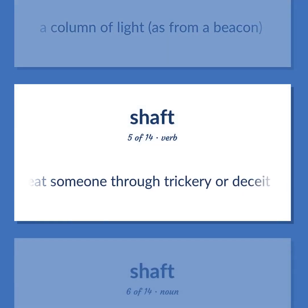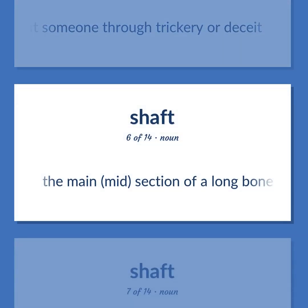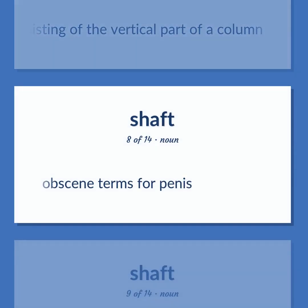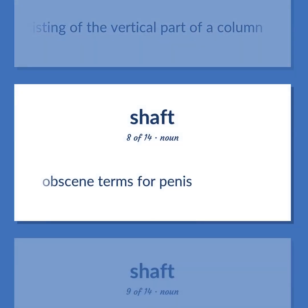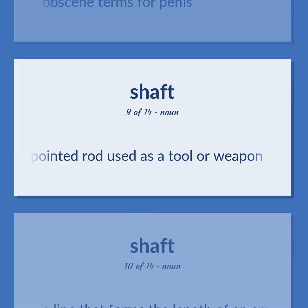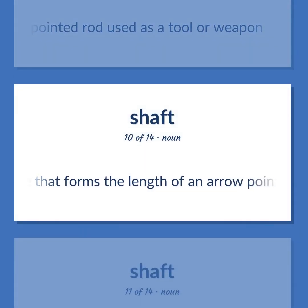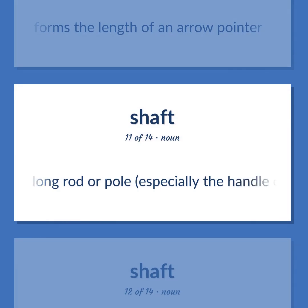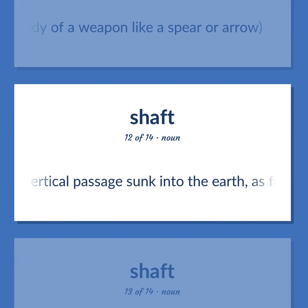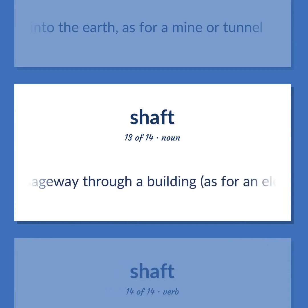Shaft: Defeat someone through trickery or deceit. The main mid-section of a long bone. Architecture: upright consisting of the vertical part of a column. Obscene term for penis. A long pointed rod used as a tool or weapon. A line that forms the length of an arrow pointer. A long rod or pole, especially the handle of an implement or the body of a weapon like a spear or arrow. A long vertical passage sunk into the earth, as for a mine or tunnel. A vertical passageway through a building, as for an elevator.